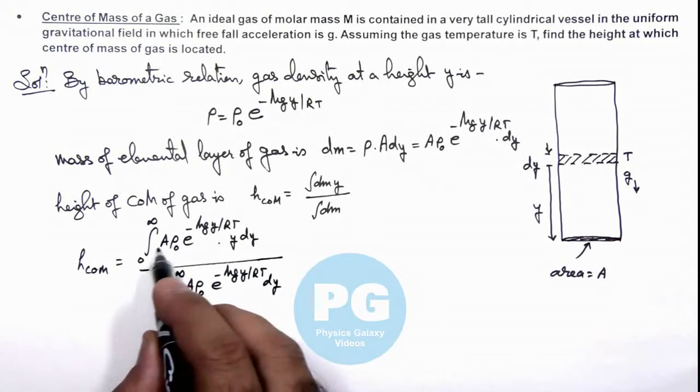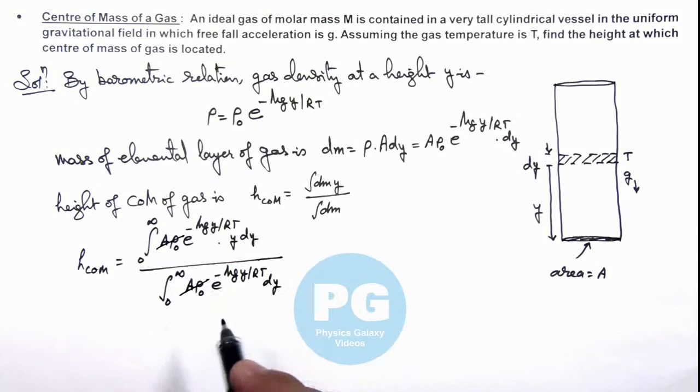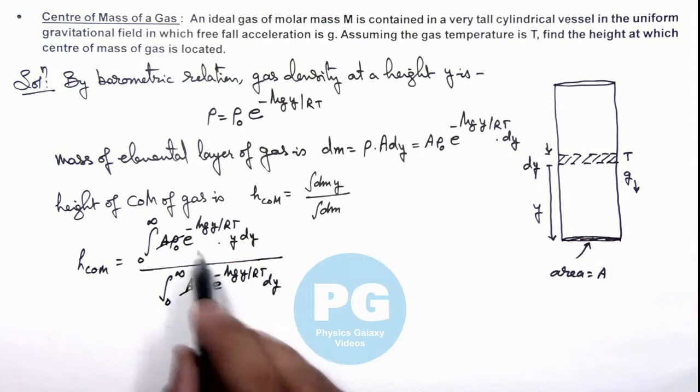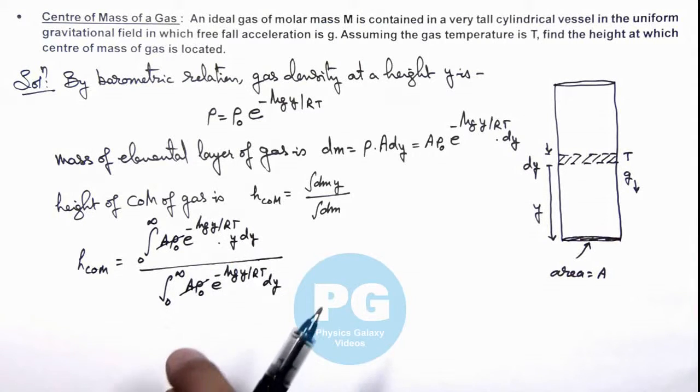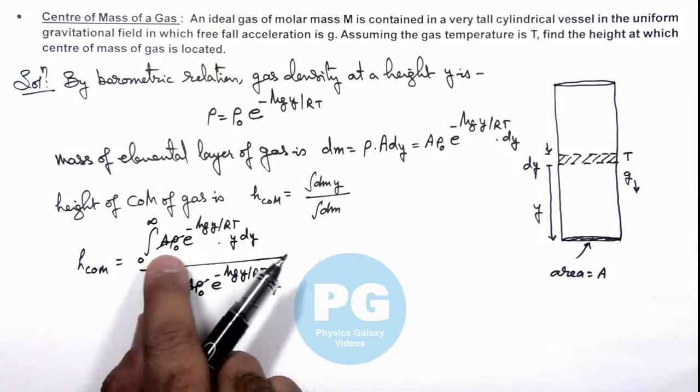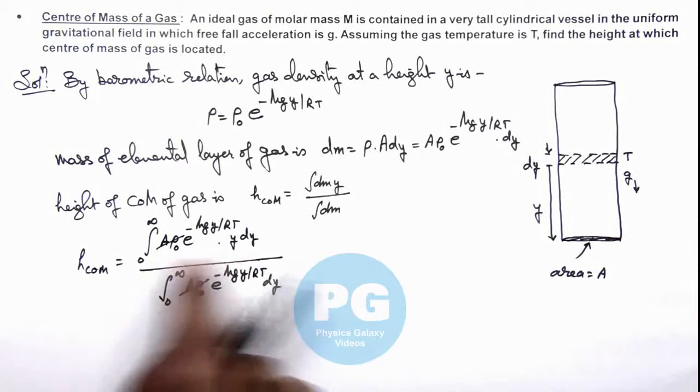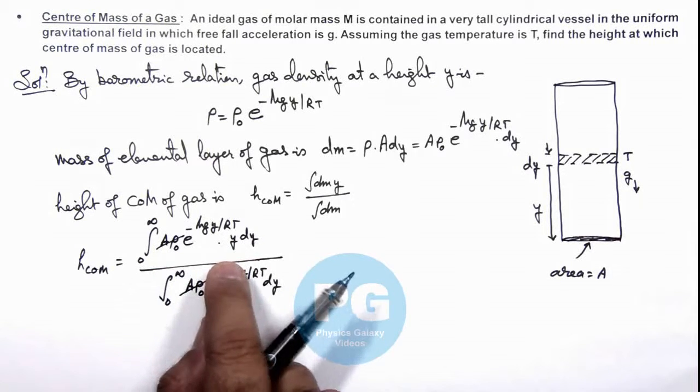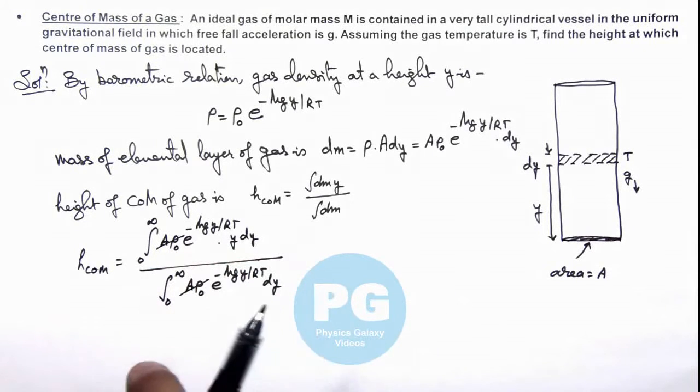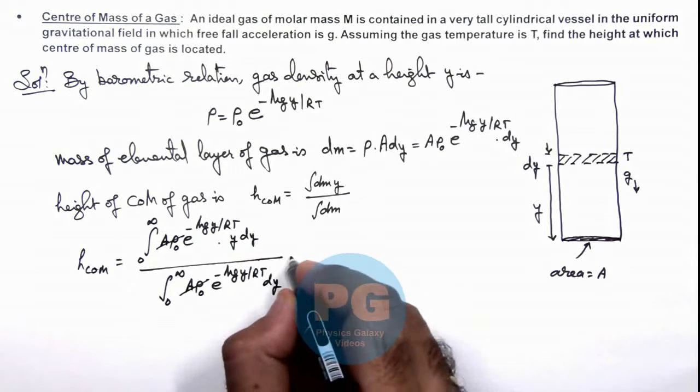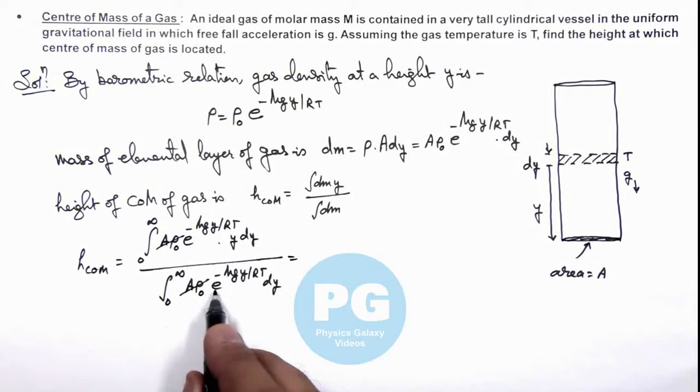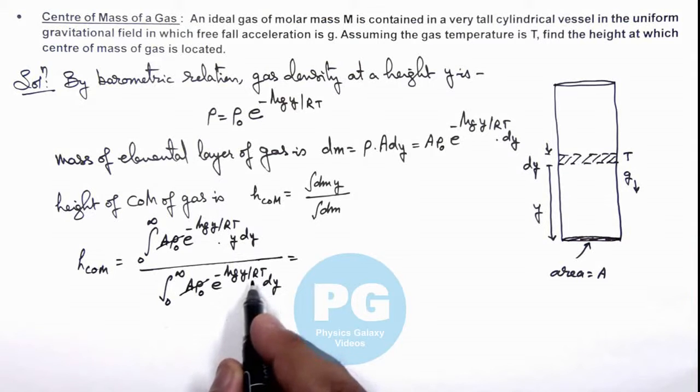Here, A·ρ₀ gets cancelled out. And if we integrate these values, I can leave it for you to simplify. This integration in numerator we can solve by integrating it by parts, which I can do it for you and rest you can manage. Here in denominator, the integration of e^(-Mgy/RT) can be written as e^(-Mgy/RT) upon Mg/RT.